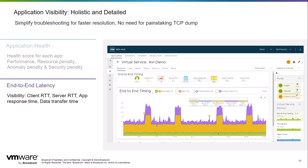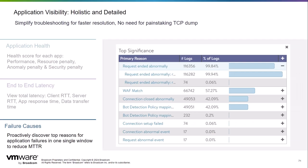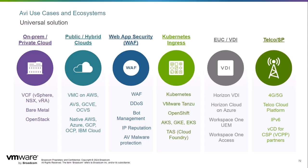Avi also provides failure causes. You can proactively discover top reasons for application failures in one single window to reduce mean time to repair. Here is a list of Avi use cases and ecosystem, showing it is a universal solution. We are focusing on the on-premises private cloud use case with VCF and NSX, but you can see that there are many use cases for Avi.